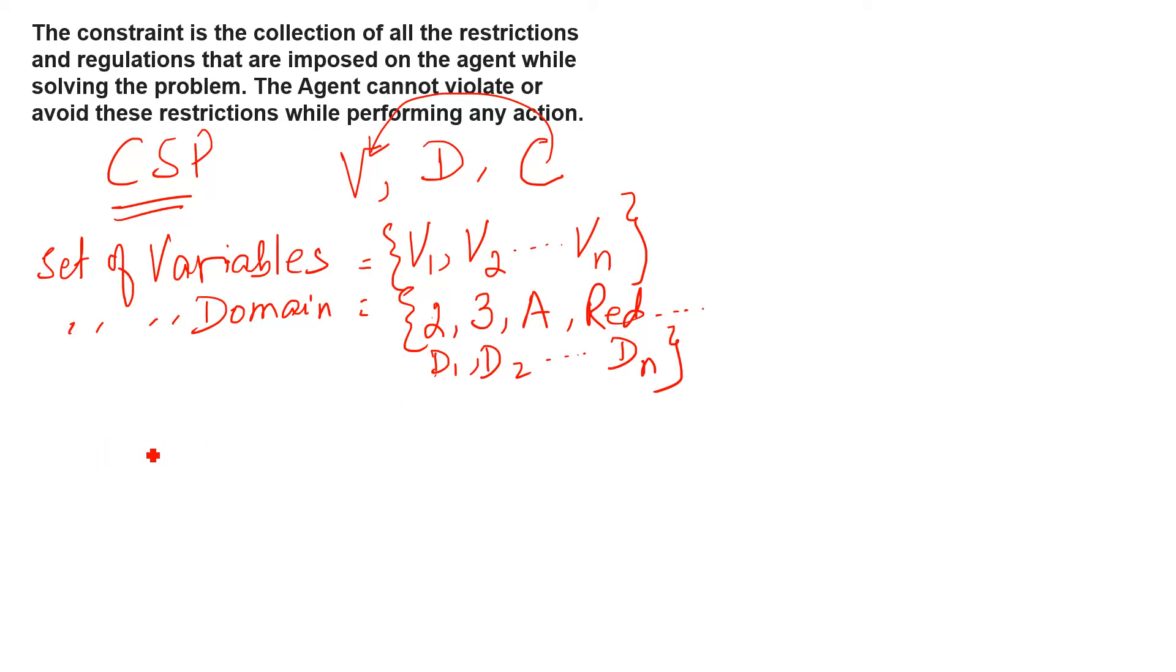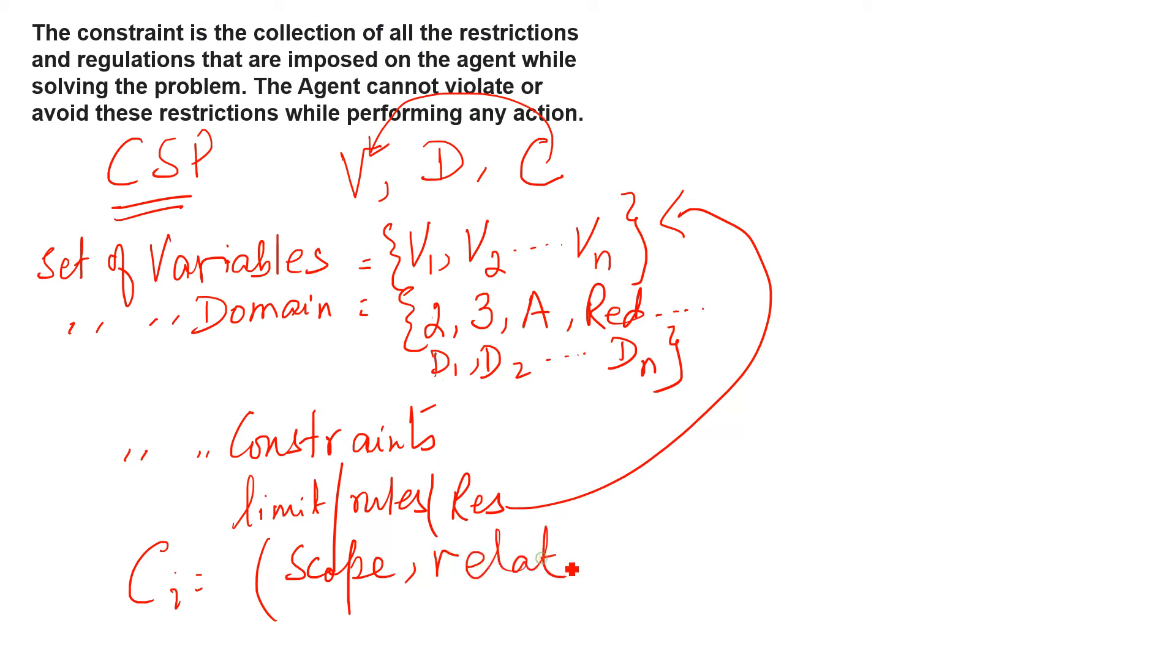And third and important part is set of constraints. Constraint means here we set some limitation. Here we set some rules or some restrictions which variable has to satisfy. How we write this constraint? We write constraint C_i is equal to scope and relation. What is the meaning of scope and relation?